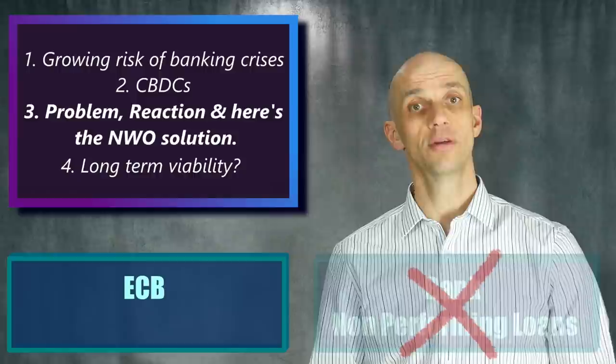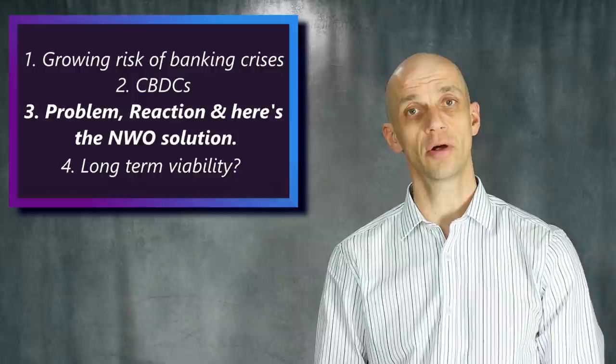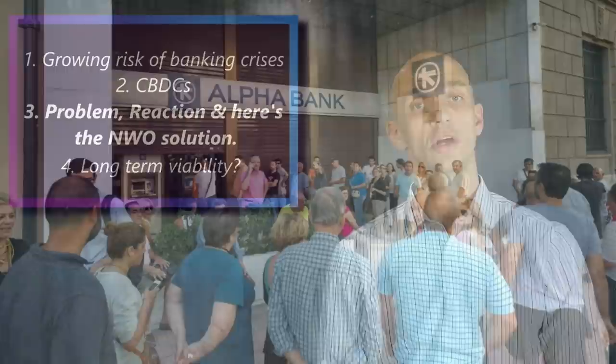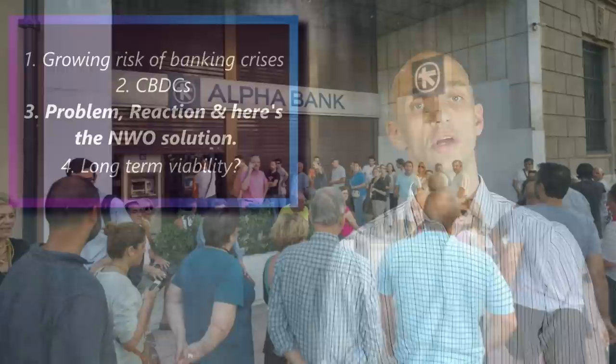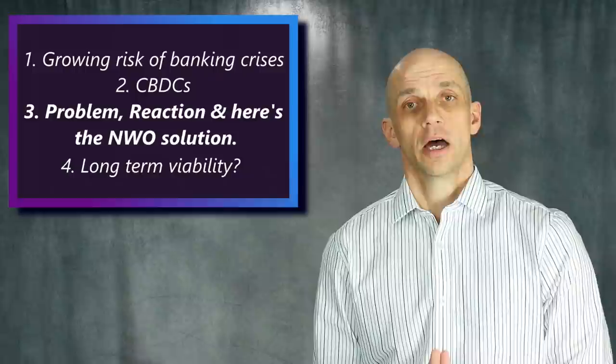As loans go bad and are eventually written off, the money supply therefore contracts. Meanwhile under this scenario, the people that lose their deposits amidst the ruins of failed banks will be offered their digital dollars, Fed coin or digital euros. And just remember these CBDCs are literally designed to remove the need for a banking sector.